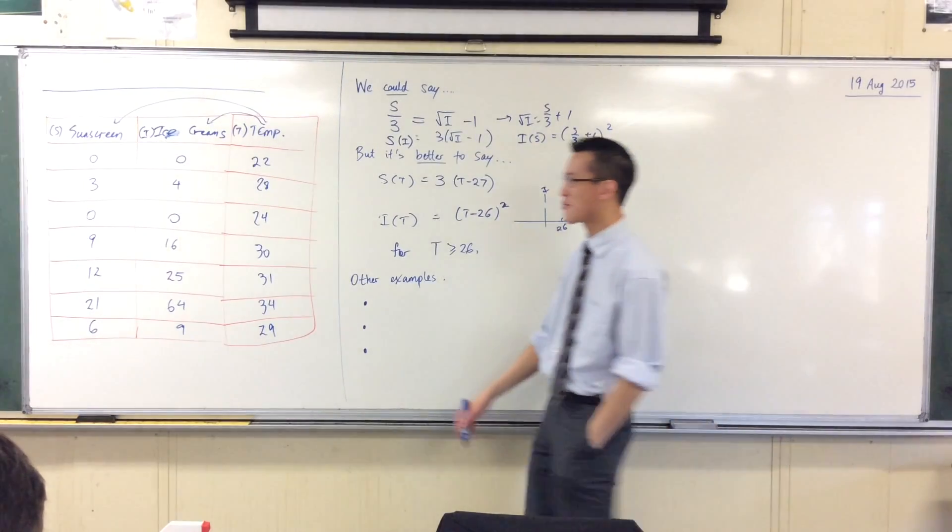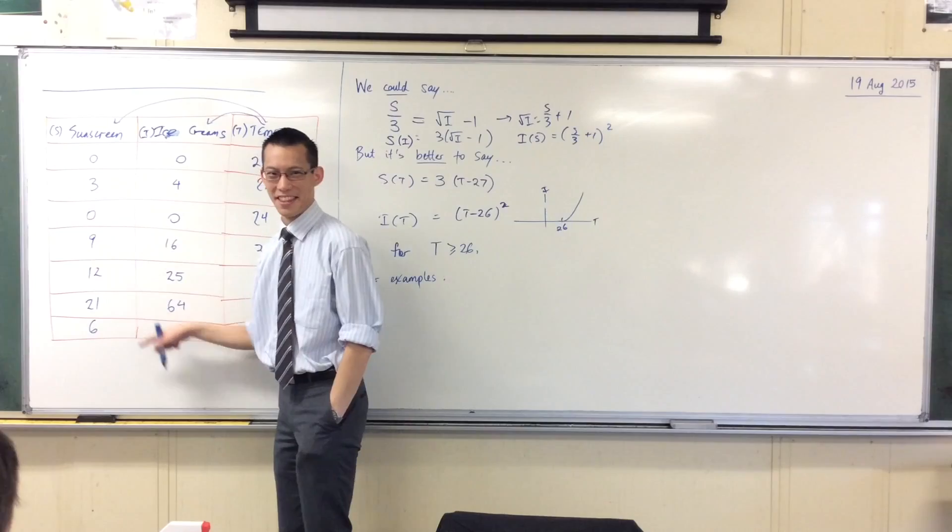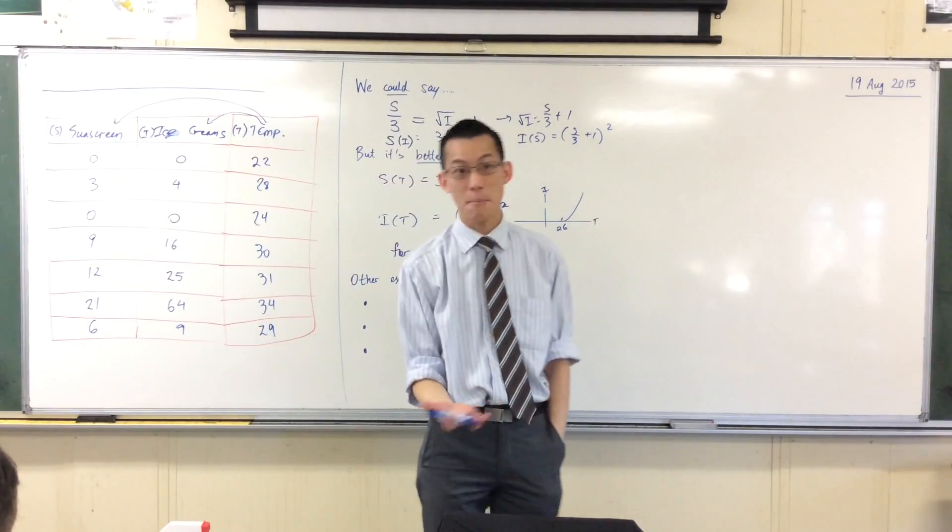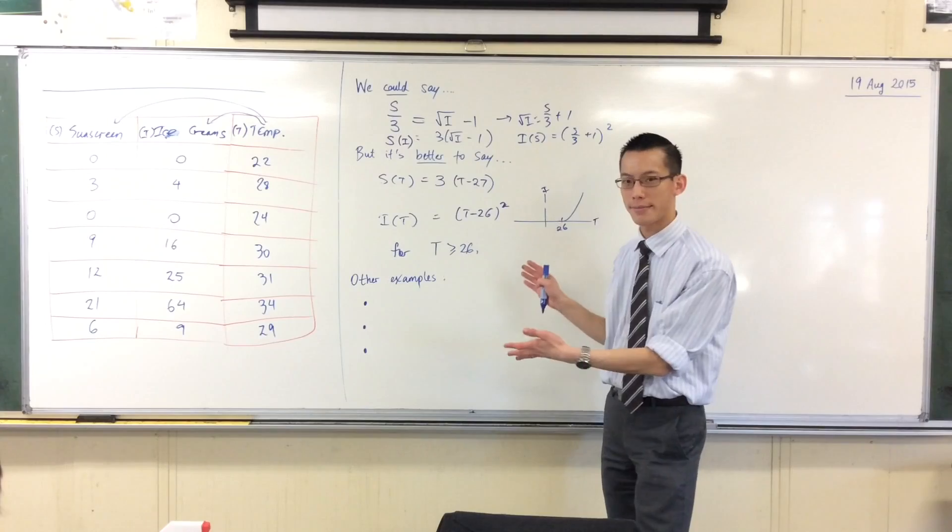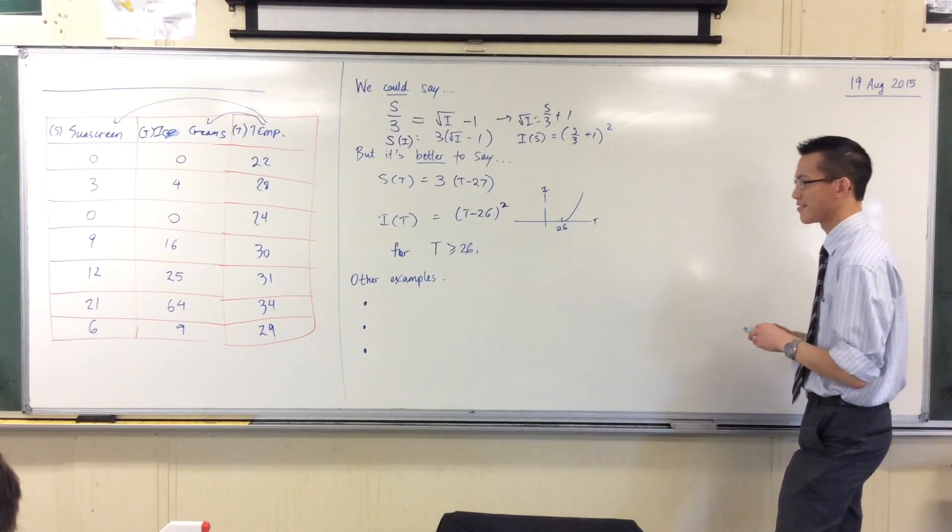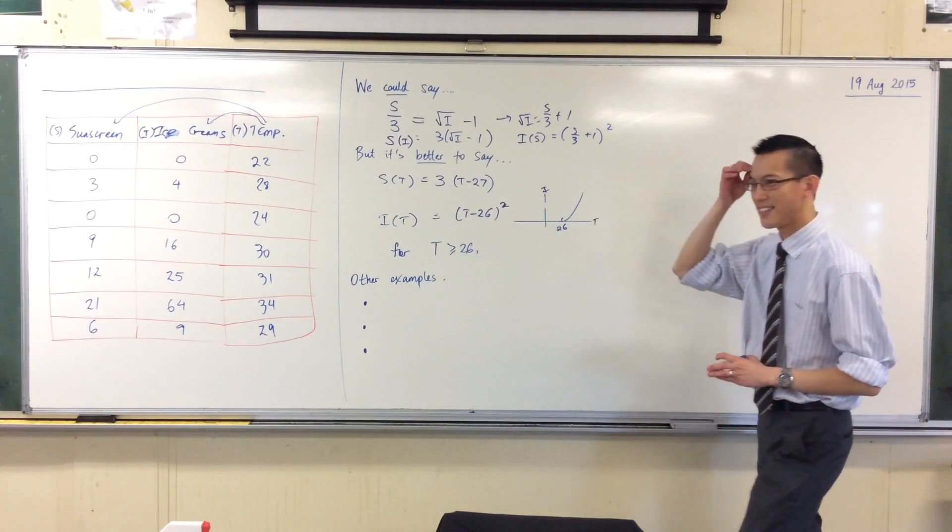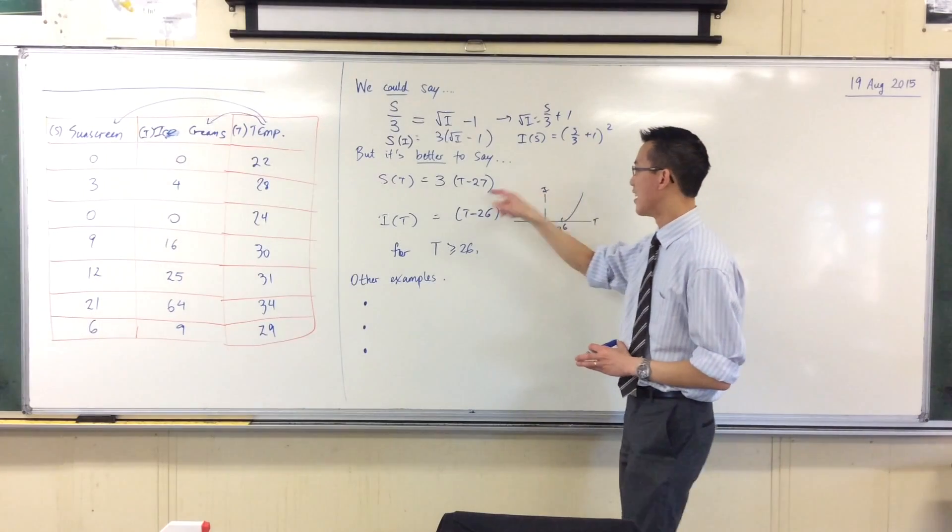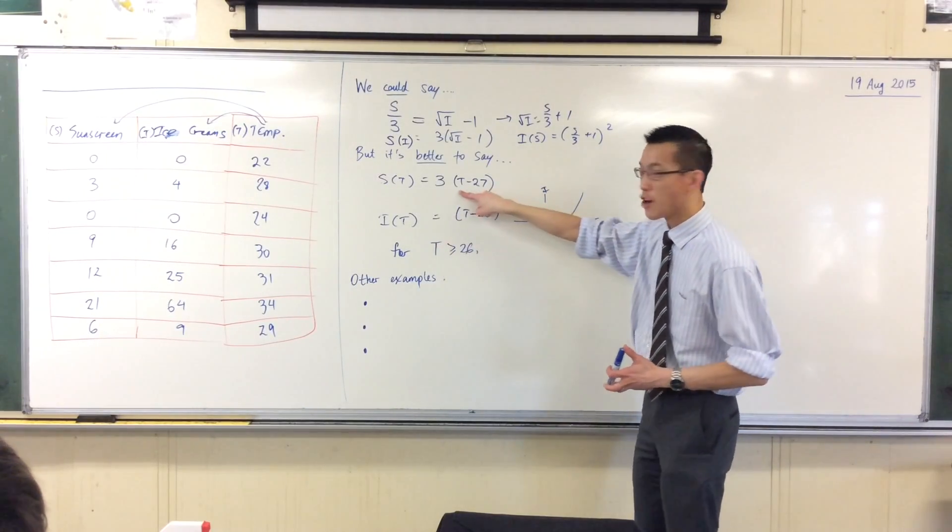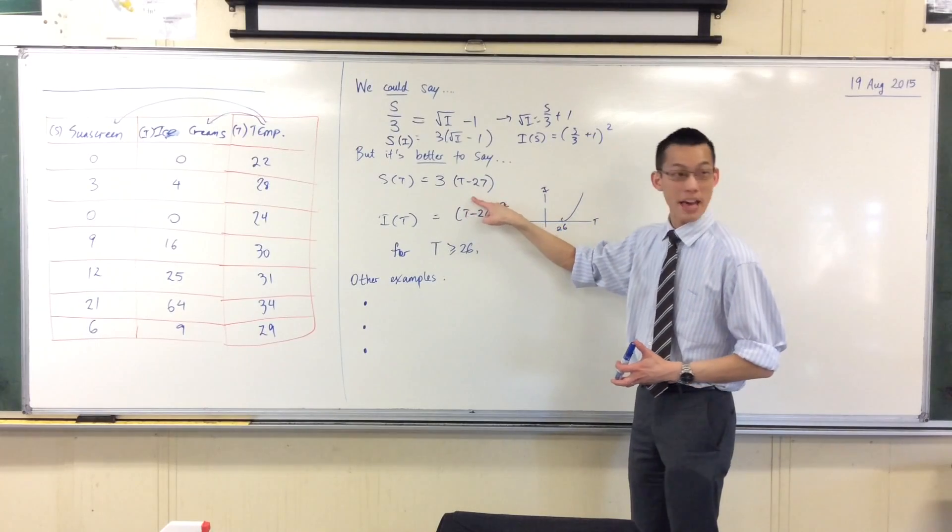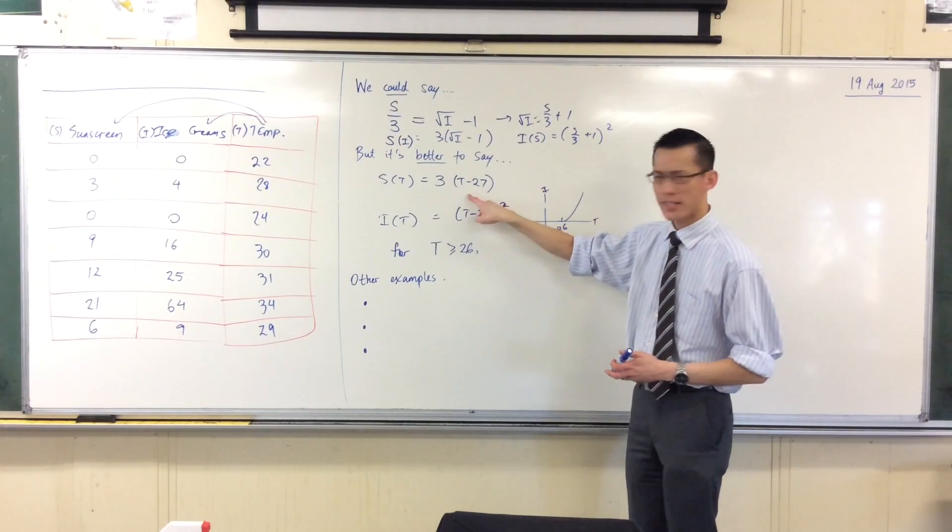Companies will be dealing with rather more complicated data than this, but they do do that. They model things and they're trying to get equations that follow the patterns that they've got. If the temperature is 26 degrees, you're going to be selling minus three bottles of sunscreen. So perhaps I should have taken this one. Would that be a better restriction to go on?